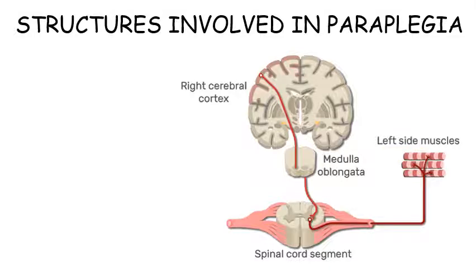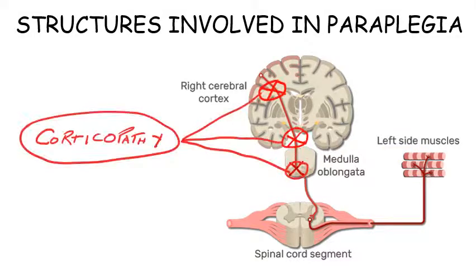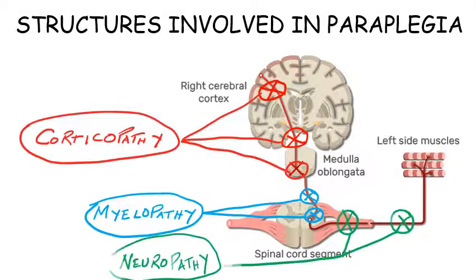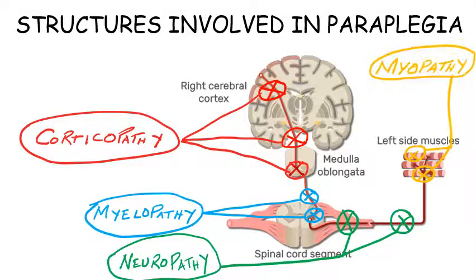If there is damage to structures in the brain, we get corticopathy. Damage to the corticospinal tract as well as anterior horn cells inside the spinal cord causes myelopathy. Lesion of mixed spinal and peripheral nerves leads to neuropathy, and any pathology of the neuromuscular junction or muscle itself causes myopathy.